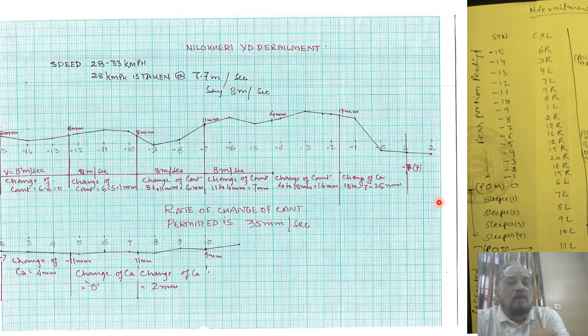From 18 to minus 7 means 25 mm. How it is contributory? How? As per manual IRP WM 35 mm per second rate of change of cant.